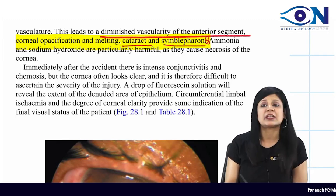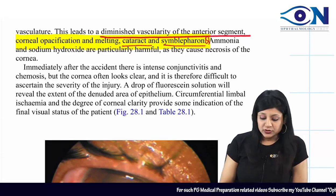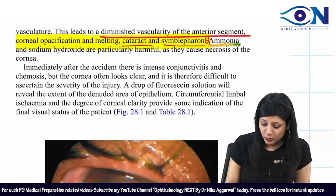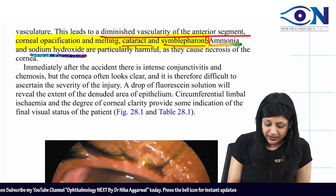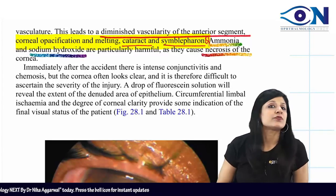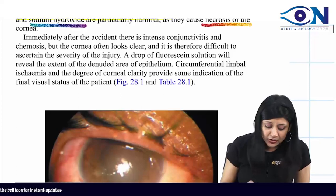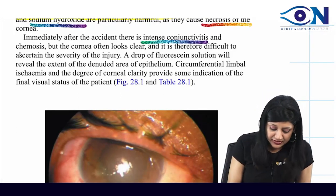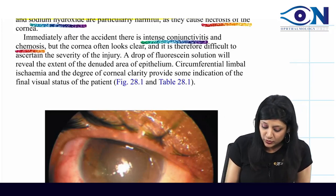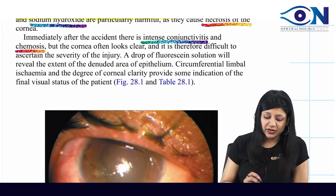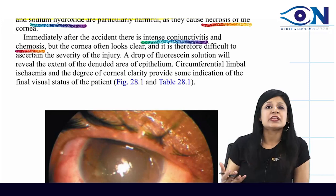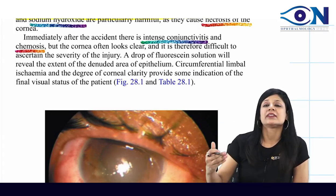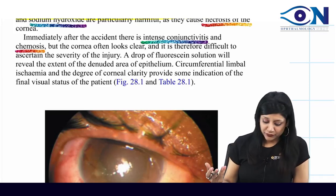Symblephron is an important complication asked frequently. Other alkalis include ammonia and sodium hydroxide, which also cause corneal necrosis. Immediately after the accident, there is intense conjunctivitis and chemosis, but the cornea looks clear, so opacification is not seen right away — it takes some time for alkalis to work.